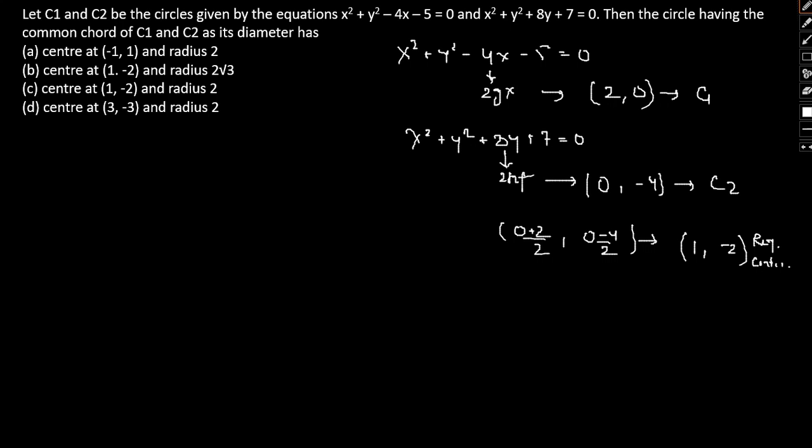Next, it's said that the circle actually has a common chord, so the common chord can be simply given by 8y + 7 + 4x + 5 = 0, so 4x + 8y + 12 = 0, or x + 2y + 3 = 0. This is the common chord. Now we have the center here at (1, -2), so options (a) and (d) get cancelled. We have left (b) and (c).